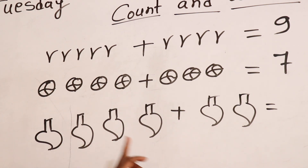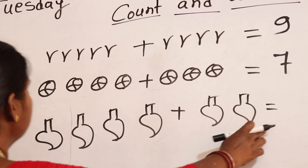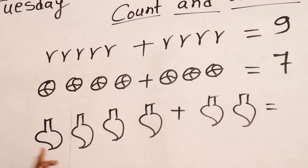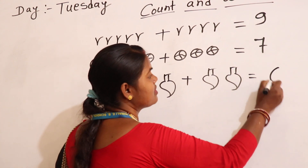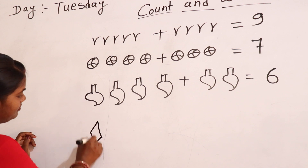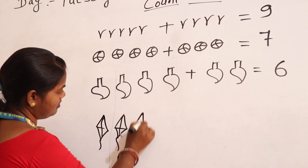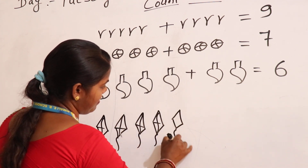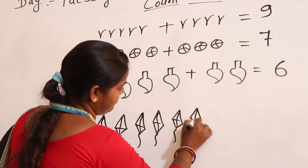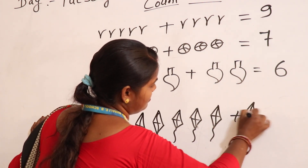This is four words plus two words. This is equal to total words are one, two, three, four, five, six. Total words are six.